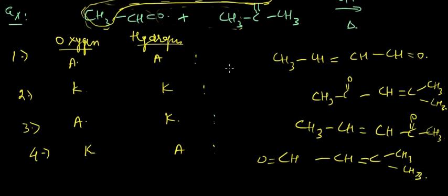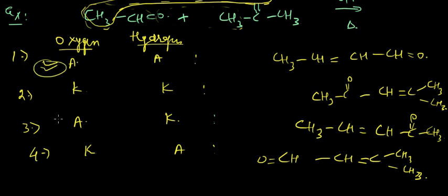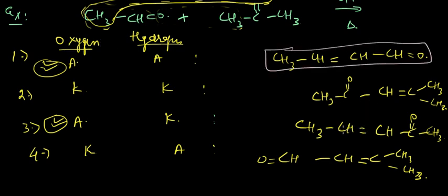So these are the four compounds we get. We know that aldehyde is more reactive towards the aldol reaction simply because it has more partial positive character on the carbon containing the double bond with oxygen. Hence, there is more possibility that the nucleophile will attack from the ketone part onto the C=O bond of the aldehyde. Hence, wherever oxygen is donated by the aldehyde group — products one and three — those would be in major concentration.